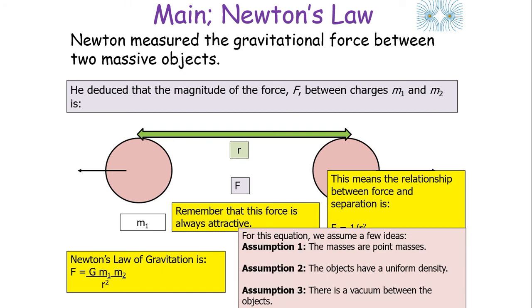For this particular equation we assume three things. Assumption one: the masses are point masses and we don't consider the volume of the sphere. Assumption two: the objects have a uniform density. Assumption three: there is a vacuum between the objects, with nothing hindering the field from being projected.